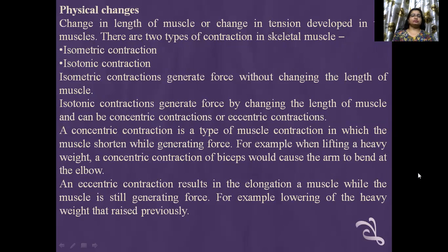Physical changes: change in length of muscle or change in tension developed in the muscle. There are two types of contractions in skeletal muscle: isometric and isotonic. Isometric contractions generate force without changing the length of the muscle. Isotonic contractions can be concentric or eccentric. A concentric contraction is a type in which the muscle shortens while generating force — for example, when lifting a heavy weight, concentric contraction of biceps causes the arm to bend at the elbow. An eccentric contraction results in elongation of the muscle while still generating force — for example, lowering a heavy weight that was raised previously.